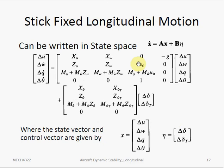We can rewrite the equation of motion in state space form like this. Here, we can see better that the state vector includes U, W, Q, and theta, while the input vector includes delta, which is the elevator deflection, and the change in thrust. We can also see that this is a fourth order system, because we have a 4x4 matrix.